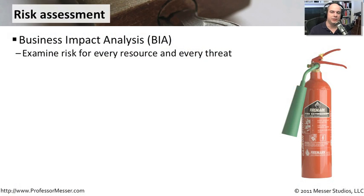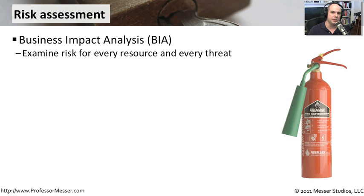There are many different ways to assess the risks that might be in your environment and the resources that are available. One common thing you can do is a business impact analysis. You need to understand what resources you have in your environment, what services you're making available to other people, and the things that are important to your organization. Then you need to think about the threats that are out there that might have an impact on those particular resources.